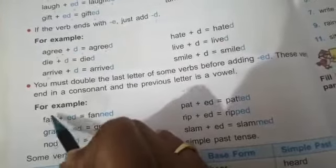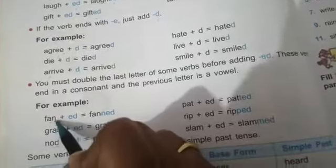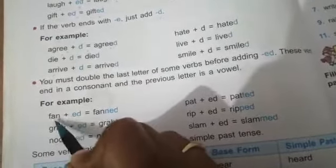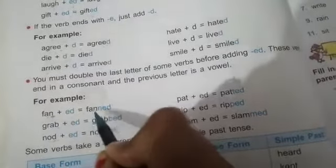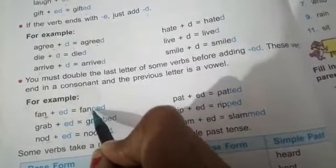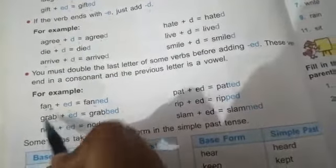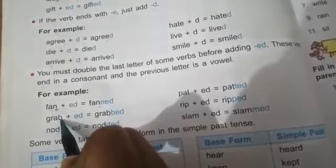And after doubling this, we will add ed. So fan plus ed, and we will double this letter n. So fanned. Here again see, grab. Here b is ending, grab is ending with b. B is consonant.